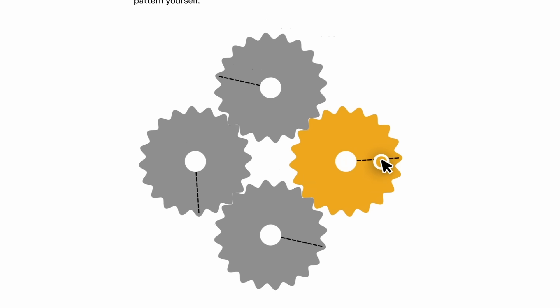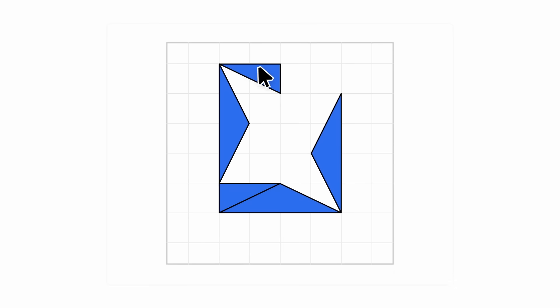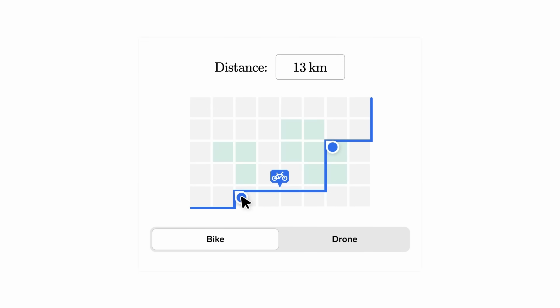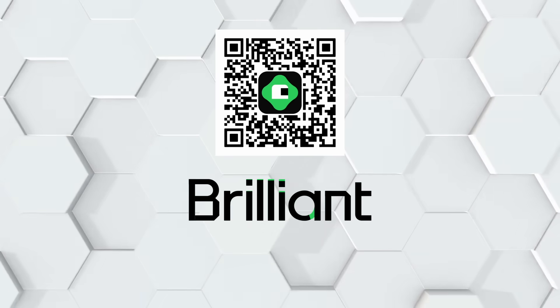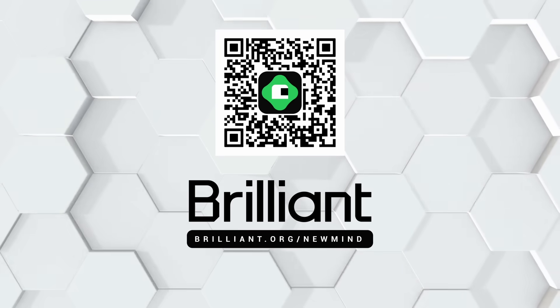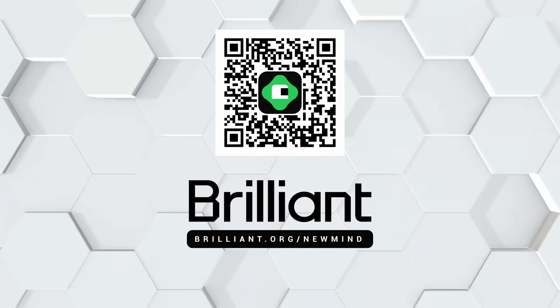A great start to becoming a skilled geometric problem solver I highly recommend is Brilliant's geometry course. In this series of lessons, you'll enhance your visual and spatial thinking abilities while focusing on the most useful mathematical concepts, cutting through complexity to highlight the fundamentals that matter most, giving you practical tools you can actually use. To try everything Brilliant has to offer for free for a full 30 days, visit brilliant.org forward slash new mind or click on the link in the description below. You'll also get 20% off an annual premium subscription.